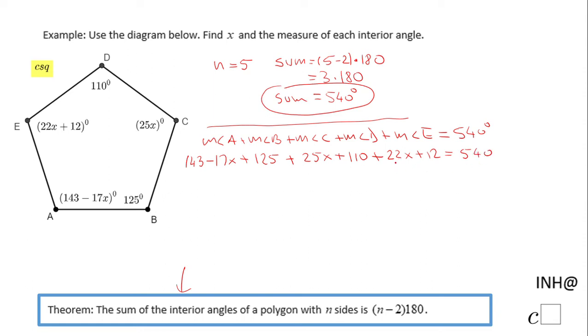Now we have to combine like terms. I'm going to start with the x's: negative 17x, 25x, and 22x. If we combine those, we get 30x.